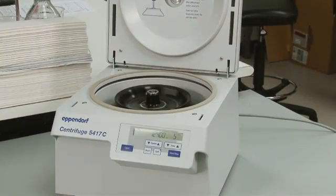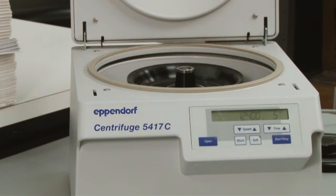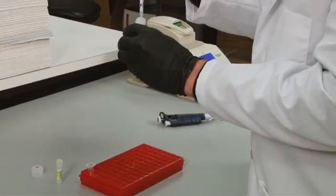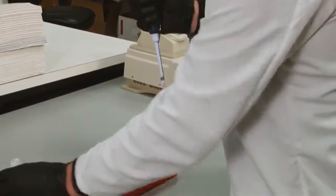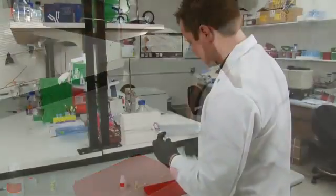After the samples have been successfully sheared, centrifuge at 4 degrees Celsius for 5 minutes at 12,500 G. Remove the supernatant and transfer to a new tube or aliquot into 10 to 40 microliter samples. These samples can be safely stored at negative 80 degrees Celsius for up to one month. To test for shearing efficiency while optimizing this phase and optionally afterwards, run one aliquot of your sample on a 1.5% agarose gel.